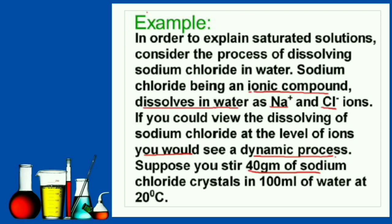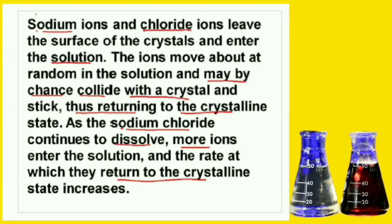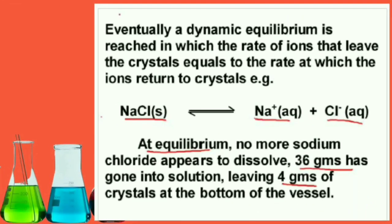Suppose you stir 40 grams of sodium chloride crystal in 100 ml of water at 20 degrees Celsius. Sodium ions and chloride ions leave the surface of the crystal and enter the solution. The ions move about at random in the solution and may by chance collide with the crystal and stick, thus returning to the crystalline state. As the sodium chloride continues to dissolve, more ions enter the solution, and the rate at which they return to the crystalline state increases. Eventually, a dynamic equilibrium is reached in which the rate of ions leaving the crystals equals the rate at which the ions return to the crystal. At equilibrium, no more sodium chloride appears to dissolve — 36 grams has gone into solution, leaving 4 grams of crystal at the bottom of the vessel.